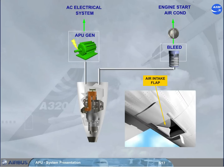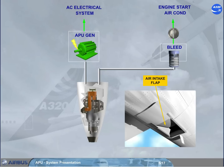The APU has an electrically operated air intake flap which, when it is opened, brings external air to its compressor inlet.